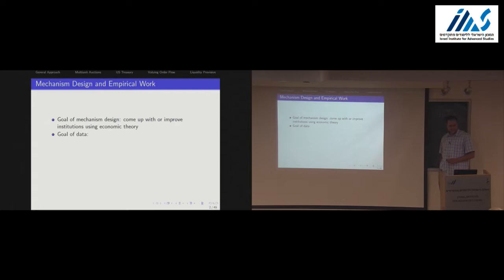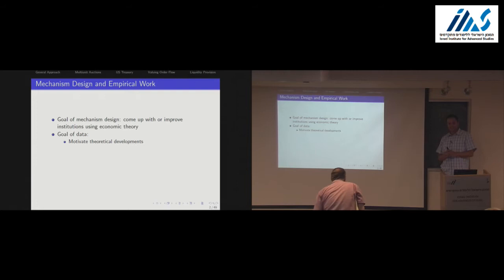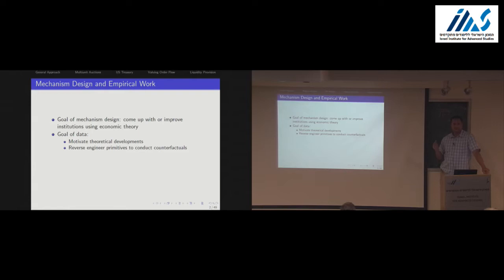The goal of the data could be twofold. One, it could motivate where we should move with our theory — which directions we might specialize the models — because we know a lot about robust implementation in the universal type space, but maybe it's local implementation that we care about more in particular examples. Another, and this is going to be the more important feature from my perspective today, is that we might be interested in reverse engineering the primitives from the mechanism.